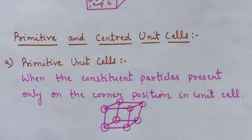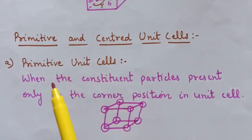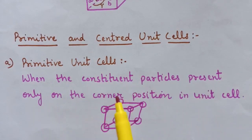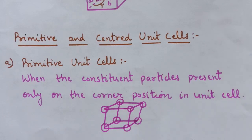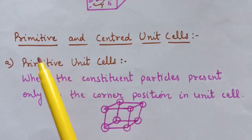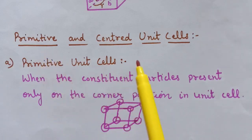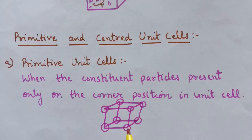Unit cells can be broadly divided into two categories: primitive and centered unit cells. In primitive unit cells, the constituent particles are present only at the corner positions. These are known as primitive unit cells or simple unit cells. In this figure the particles are present only at the corners, so we call it a primitive unit cell.